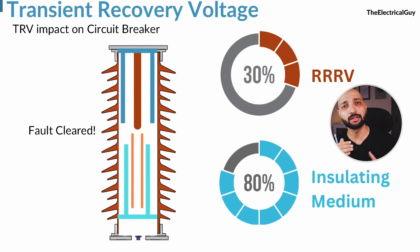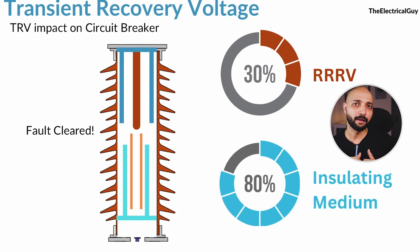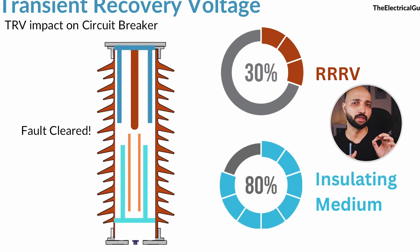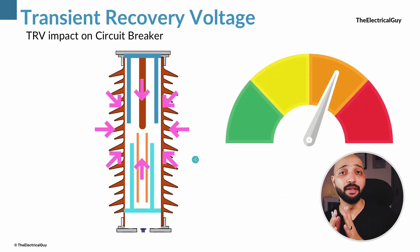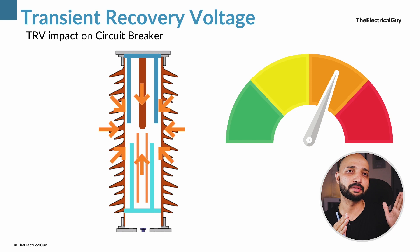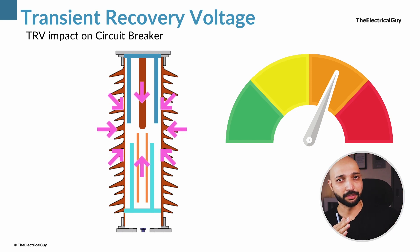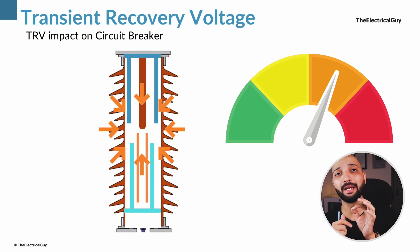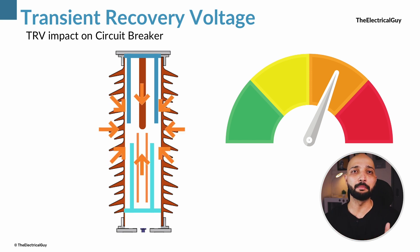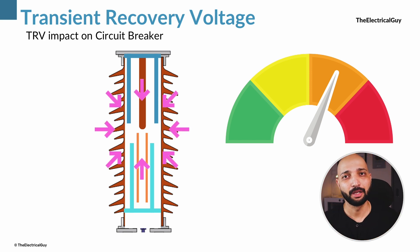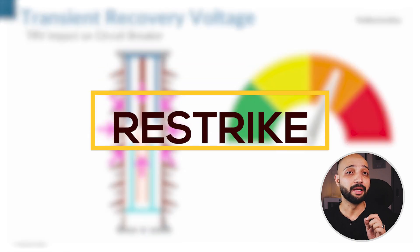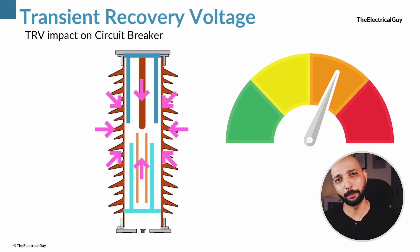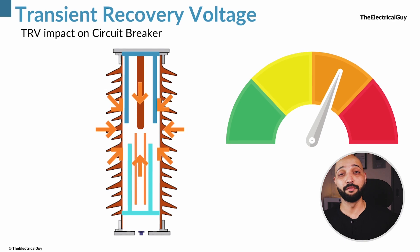This process of re-establishing current is called re-ignition, and it generally occurs almost immediately after current zero because the arc plasma containing conducting ions re-establishes current. If TRV is very high, it will stress the interrupting medium that has returned to its insulating state. If the electric field created across the contacts is very high, a dielectric breakdown may take place, causing the interrupting medium to become conducting and carry the current again — this process is called re-strike, and it generally occurs about a half cycle after current interruption.